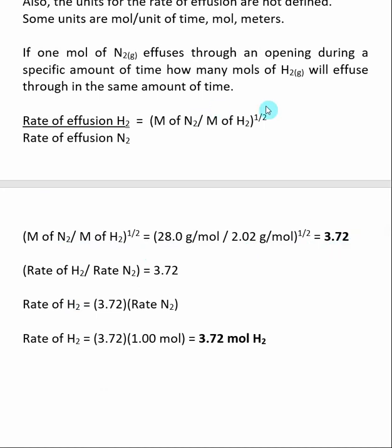This 3.72 is equal to this right-hand side of the equation. I then can equate this, the rate of effusion for H2, divided by the rate of effusion for N2, to this 3.72. And what we are solving for is the rate of H2. So the rate of H2 is equal to 3.72 times the rate of N2. And when we do this multiplication, the rate of N2 is given here. We said 1 mole.